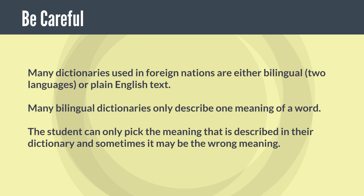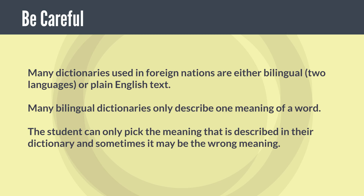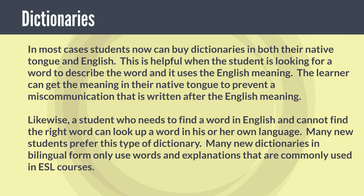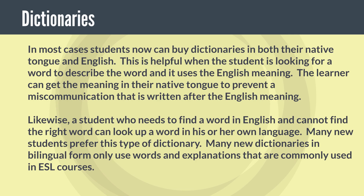Many dictionaries used in foreign nations are either bilingual — two languages — or plain English text. Many bilingual dictionaries only describe one meaning of a word, so the student can only pick the meaning described in their dictionary, and sometimes it may be the wrong meaning. In most cases students can now buy dictionaries in both their native tongue and English. This is helpful when the student is looking for a word and it uses the English meaning — the learner can get the meaning in their native tongue to prevent miscommunication.